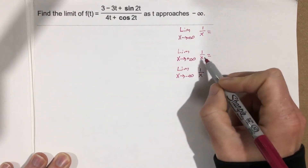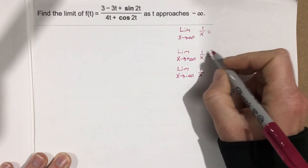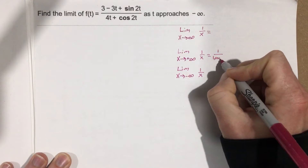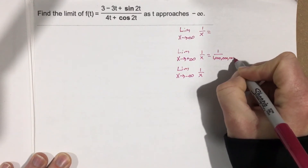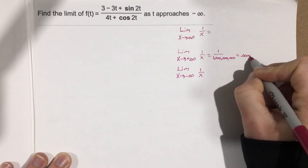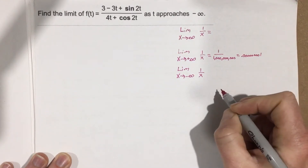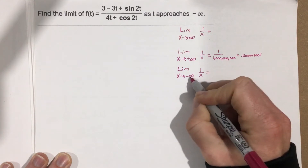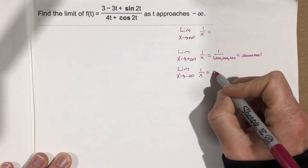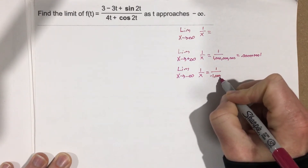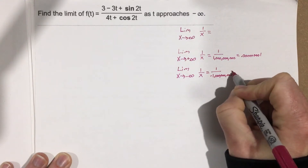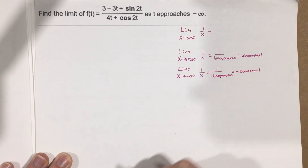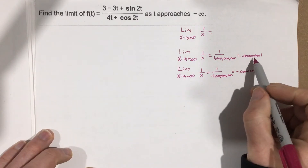If we do the limit as x approaches infinity for 1 over x, we're essentially getting 1 over a really large number, like 1 over a billion, which gives us a really small number like 0.000000001. The same thing is true for negative infinity — 1 over negative a billion gives you negative 0.000000001, so again it's a number really close to 0.